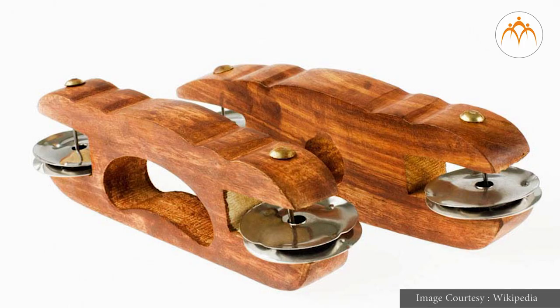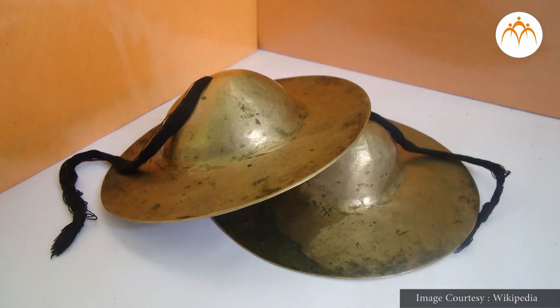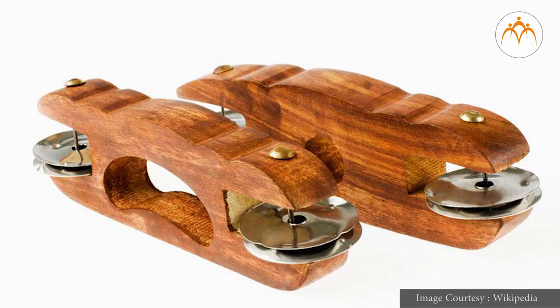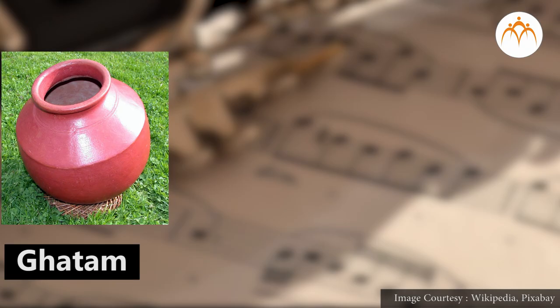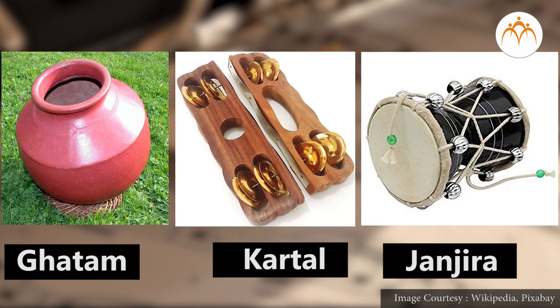Ghanavadya are made up of metal, clay or wood, need no tuning, and are used as side rhythm instruments. Instruments like Ghatam, Kartal, and Janjira fall in this category.